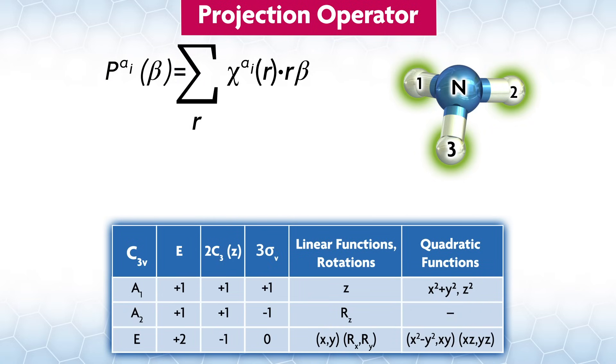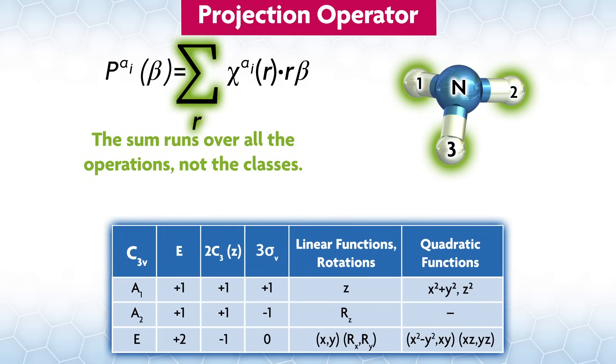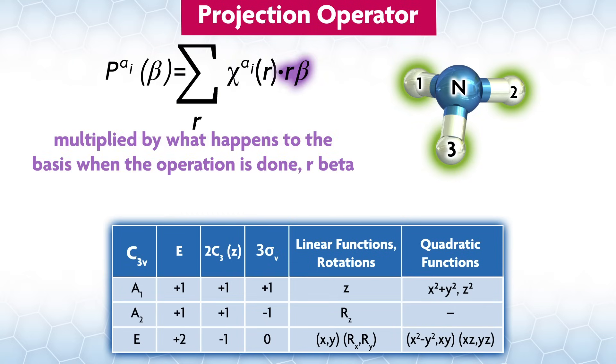Here's the equation for projection, which is done for a specific irreducible rep, a sub i. The projection is done on a specific part of the basis, which we'll call beta. The sum runs over all the operations, not the classes, which will give the symbol lowercase r. Chi, again, is the character for the irreducible rep, which is multiplied by what happens to the basis when the operation is done, r beta.